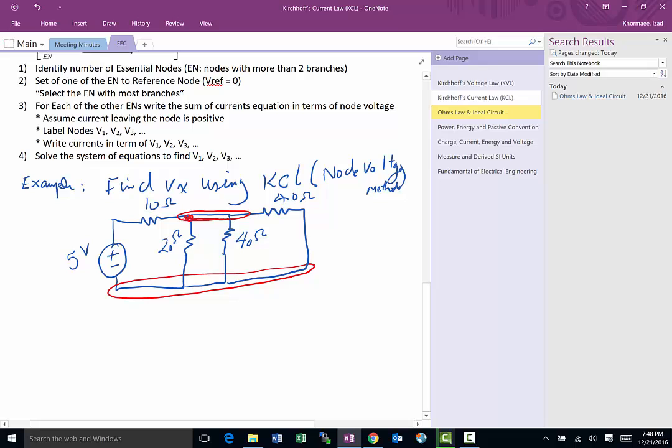So the number of essential nodes is equal to two. Notice this one is a node because two branches are coming in but they are not essential nodes.